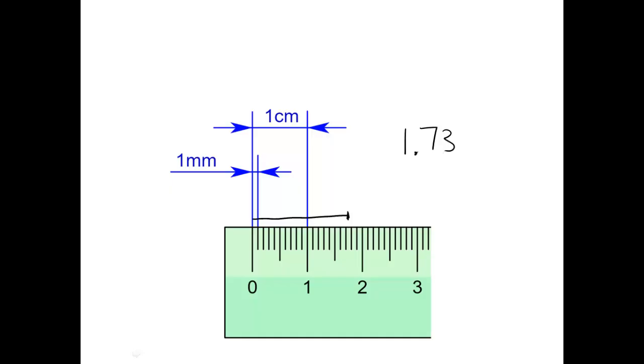Now this is in centimeters. And so the uncertainty, again, would be half of the smallest subdivision. Well, the smallest subdivision here is a tenth of a centimeter, also known as a millimeter. So half of the millimeter would be 0.05 centimeters. And that's how I would record that one.